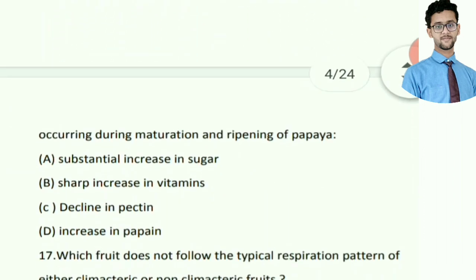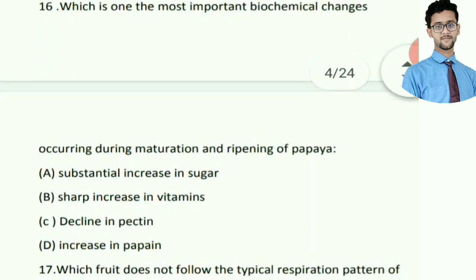Which one is the most important biochemical change occurring during maturation and ripening of papaya? Right answer is substantial increase in sugar.